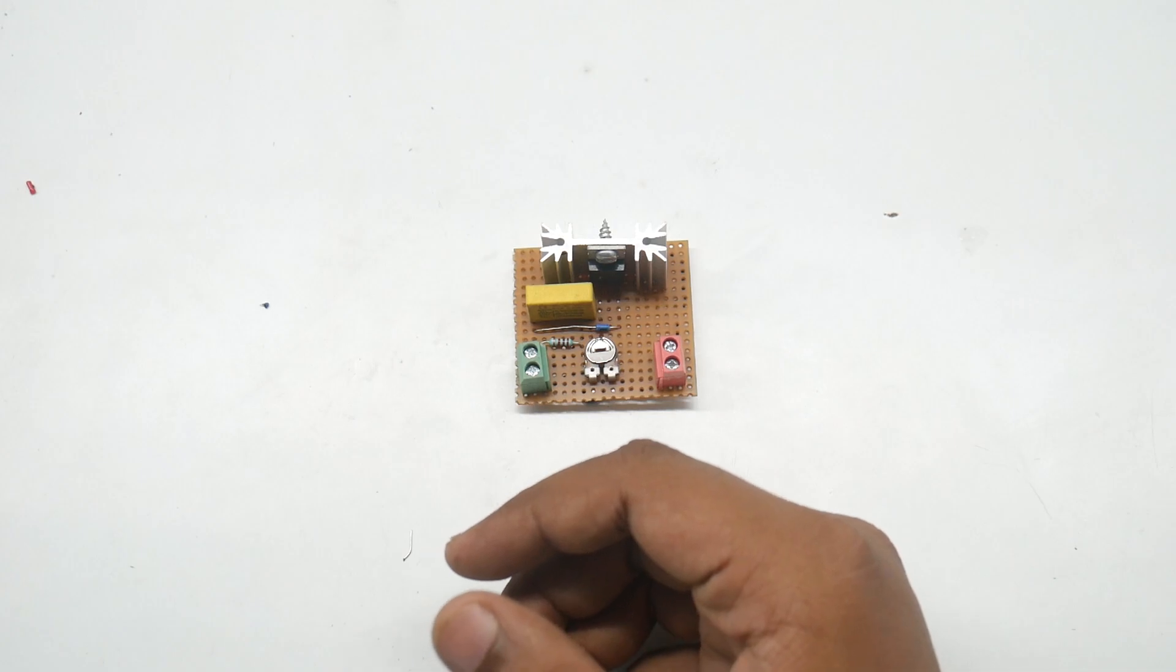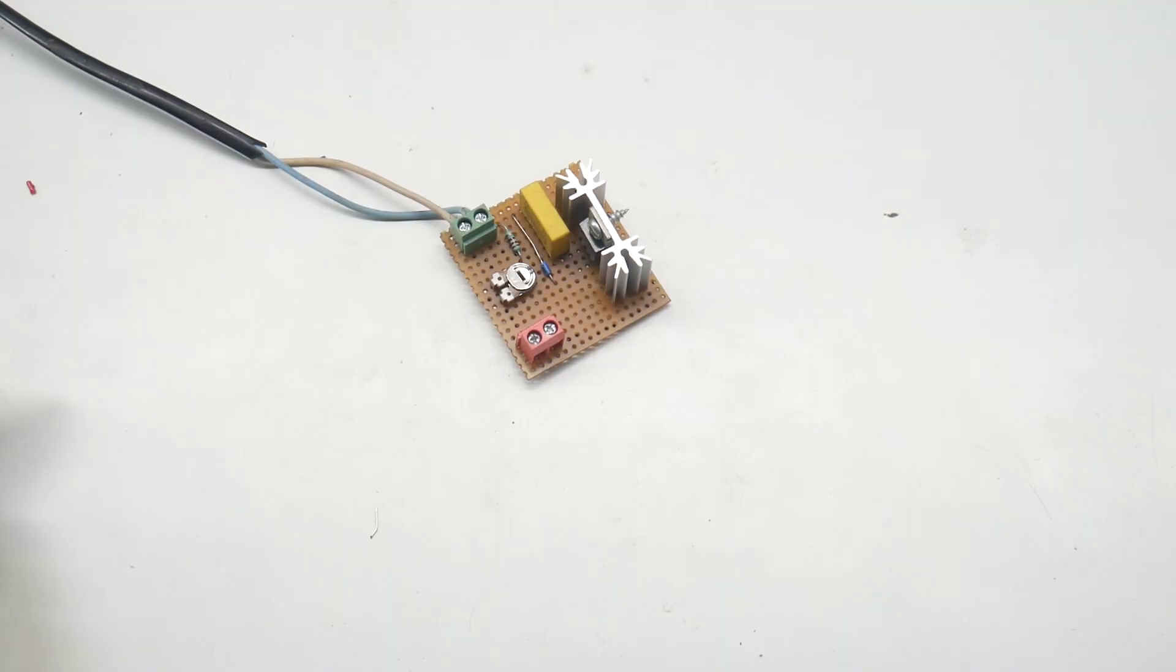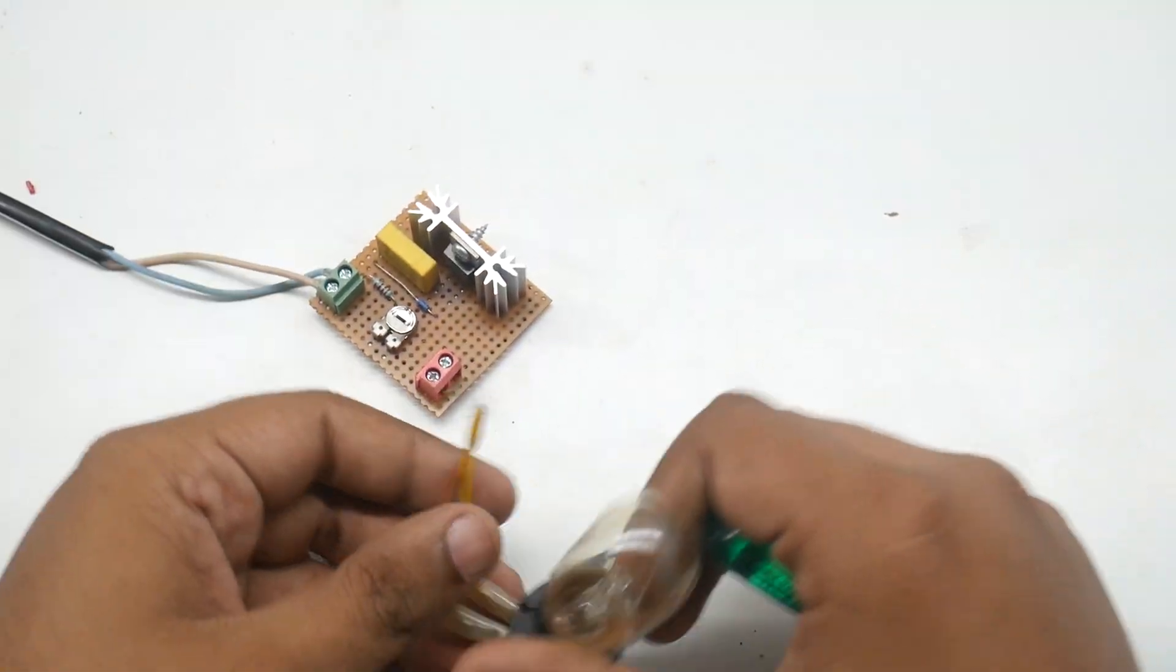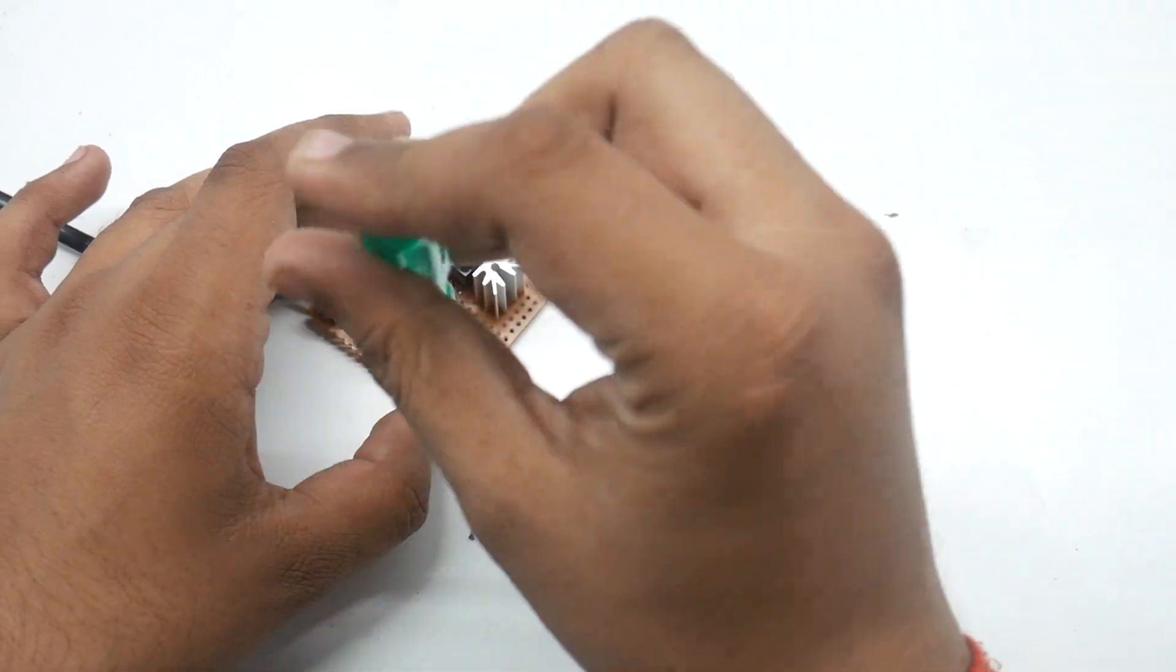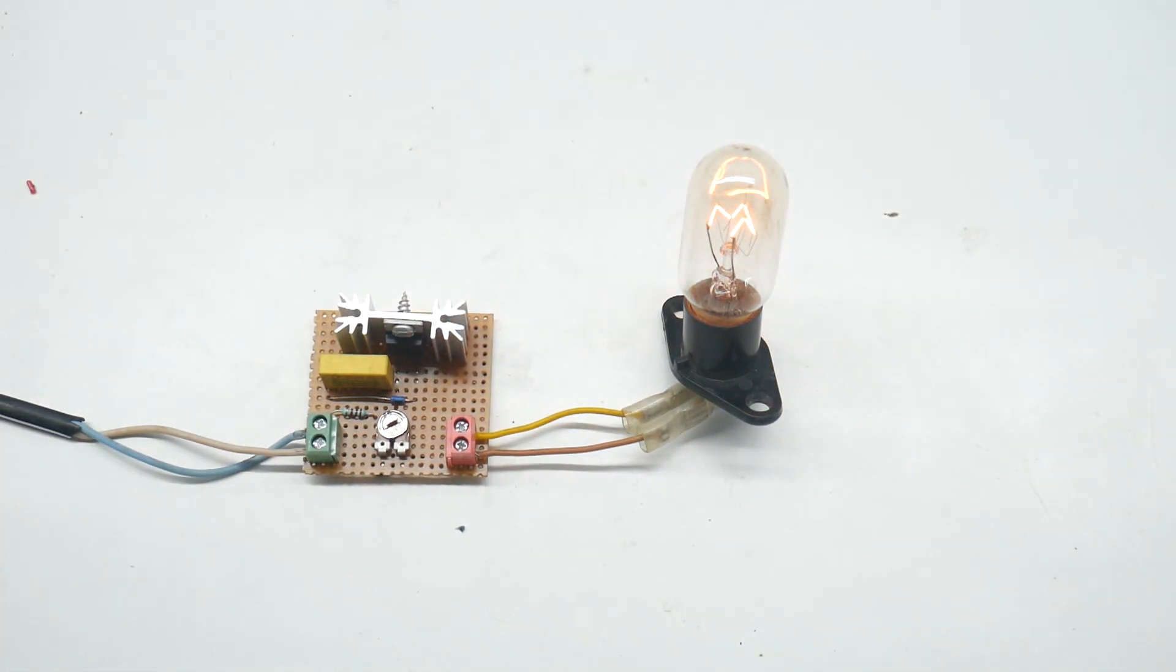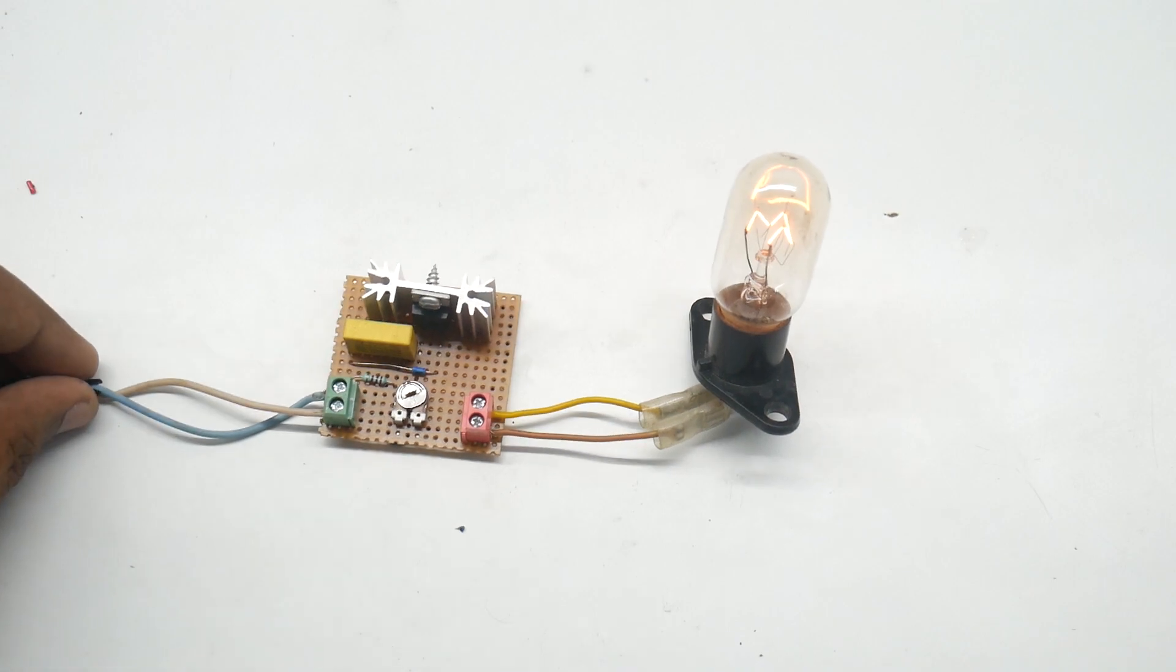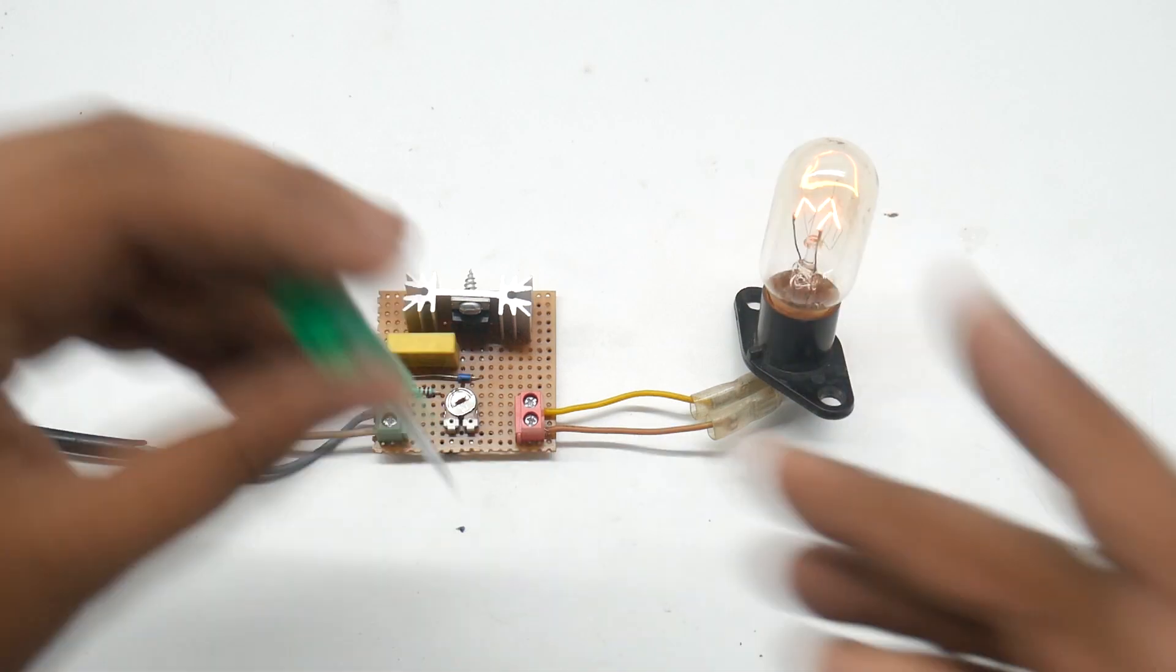That's all, we will show you the working. This is our AC wire, we will connect it, and this is our testing bulb, we will connect to the load end. Now that's all, as you are able to see the connection.